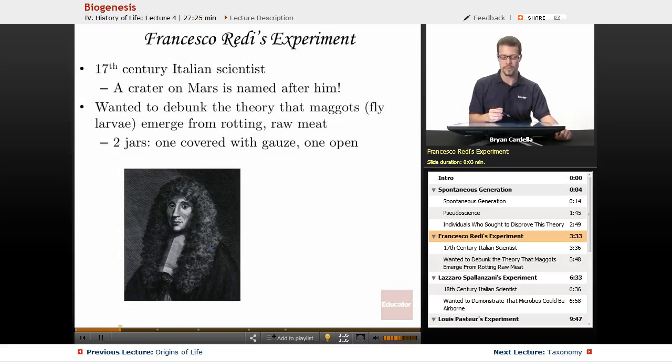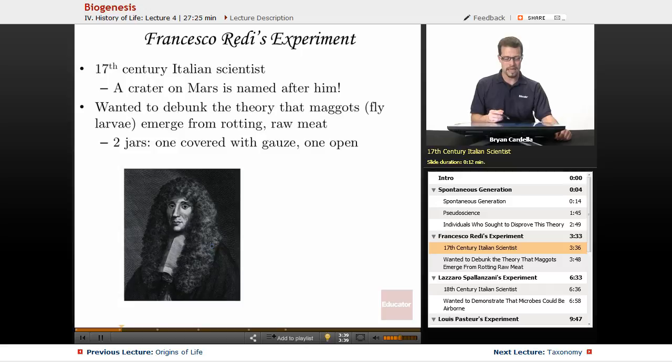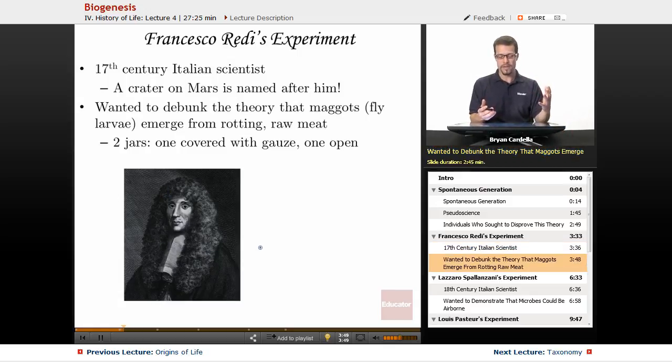So let's start with Francesco Redi's experiment. He was a 17th century Italian scientist living in the 1600s. And interesting fact about him, a crater on Mars is named after Redi. So here he is with his nice little wig.